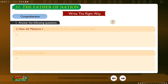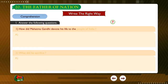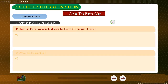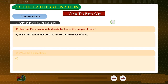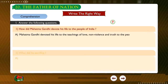Question: How did Mahatma Gandhi devote his life to the people of India? Answer: Mahatma Gandhi devoted his life to the teachings of love, non-violence and truth to the people of India.